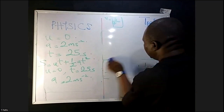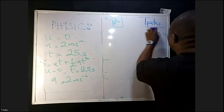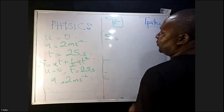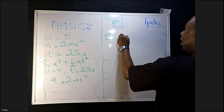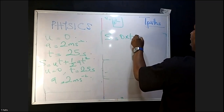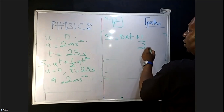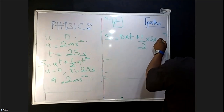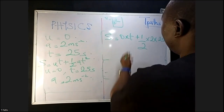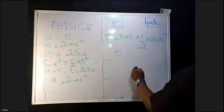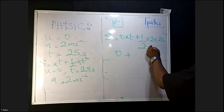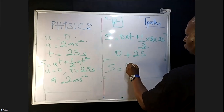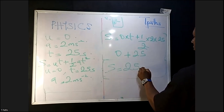S equals zero times T plus half times 2 times 25². Zero times T is zero. Half times 2 is 1, and 25 squared is 625. So S equals 625 meters. That is the answer.